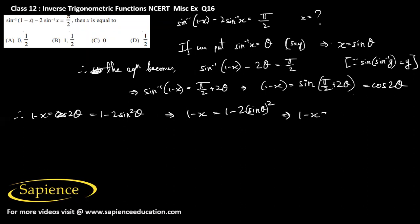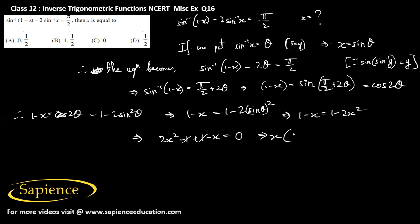We get 1 minus x equals 1 minus 2x squared. Taking all expressions to the left hand side, we get 2x squared minus 1 plus 1 minus x equals 0. The minus 1 and plus 1 cancel, giving us x(2x minus 1) equals 0.